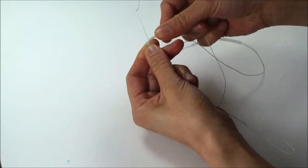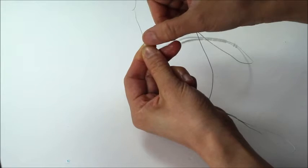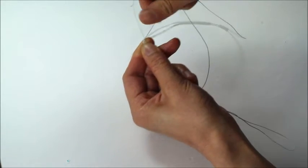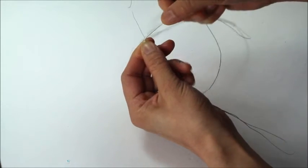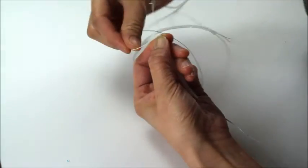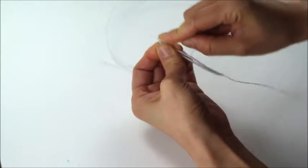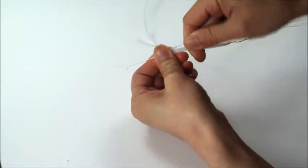Now we're going to create a pointed top, so make sure you have this at a 45 degree angle as you wrap. Go behind, back to the front at that angle, and now you have a pointed top.